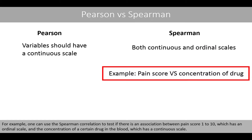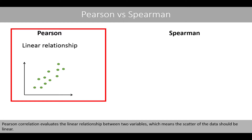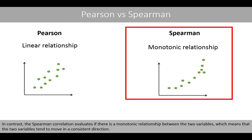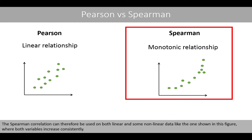For example, one can use the Spearman correlation to test if there is an association between pain score 1 to 10, which has an ordinal scale, and the concentration of a certain drug in the blood, which has a continuous scale. The Pearson correlation evaluates the linear relationship between two variables, which means that the scatter of the data should be linear. In contrast, the Spearman correlation evaluates if there is a monotonic relationship between the two variables, which means that the two variables tend to move in a consistent direction. The Spearman correlation can therefore be used on both linear and some non-linear data like the one shown in this figure, where both variables increase consistently.